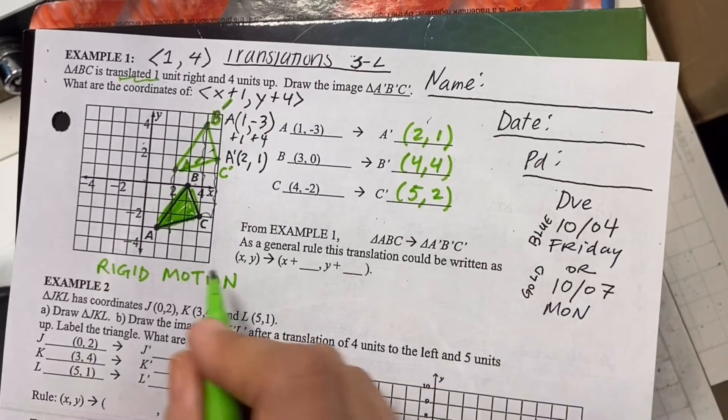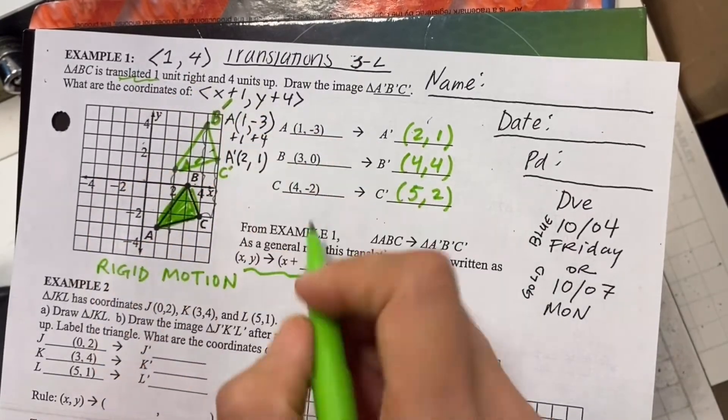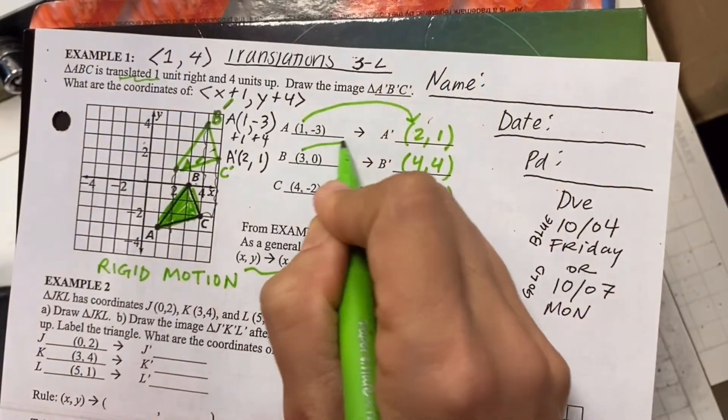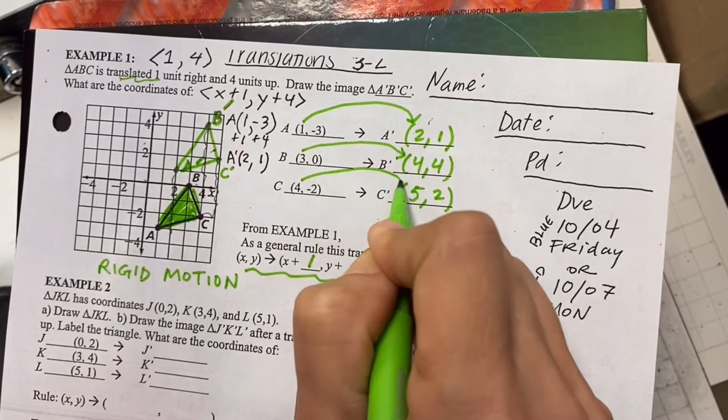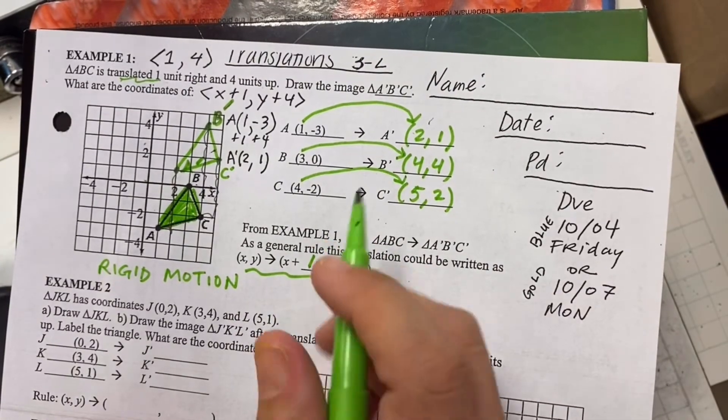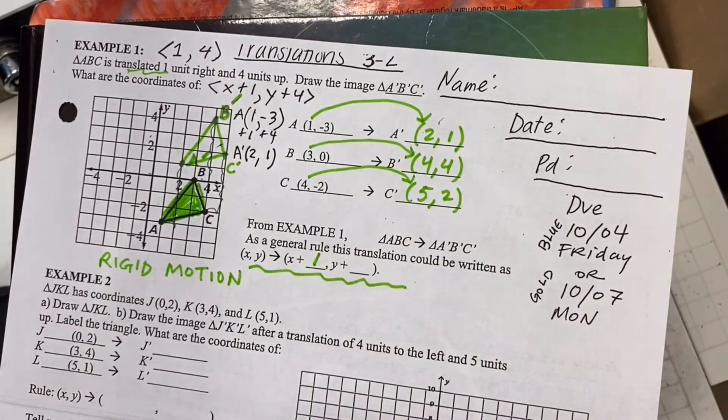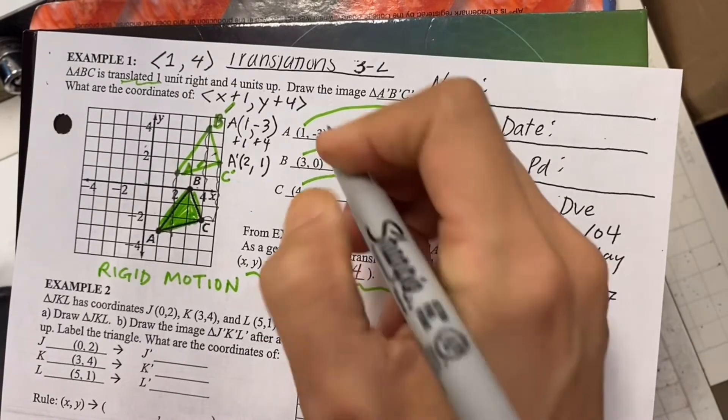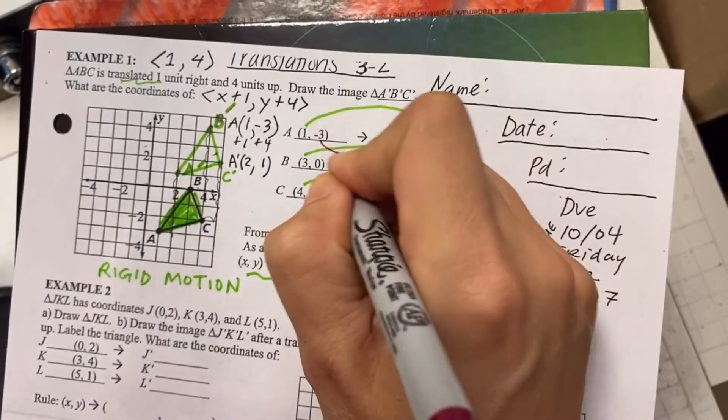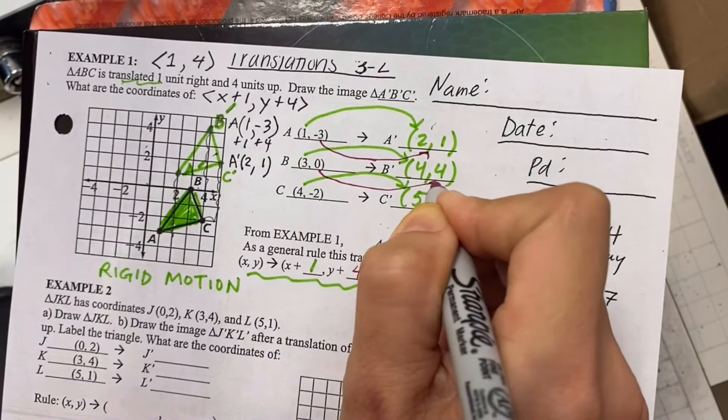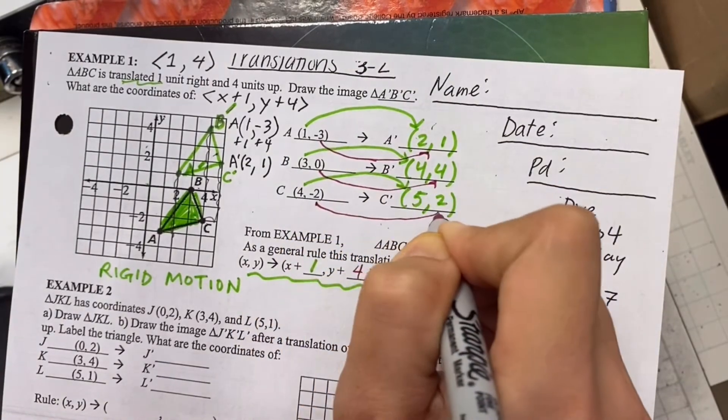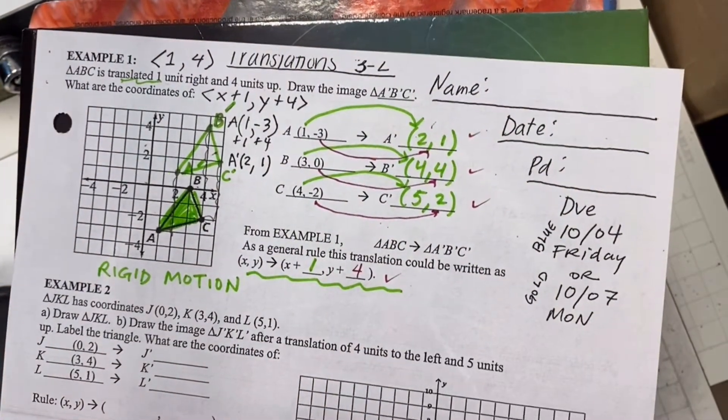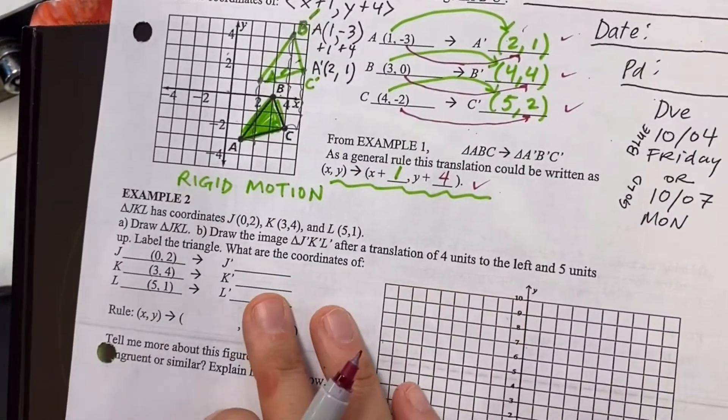Now, as a general rule, how would we write the translation? As we said above, we add one to every X value. So one plus one is two, three plus one is four, four plus one is five. We added one to all the X coordinates. And what do we do to the Y? It says four up, which is the same thing as add four. So negative three plus four, zero plus four is four, negative two plus four is positive two. That's right. And that makes sense.